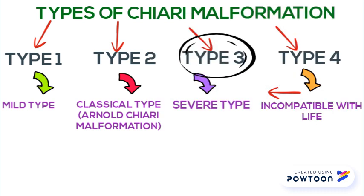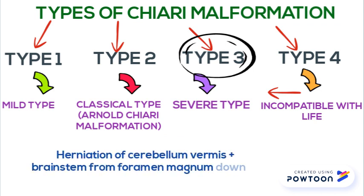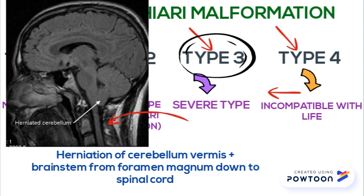In type 3 Chiari malformation, there is herniation of the cerebellar vermis plus the brain stem from the foramen magnum down to the spinal cord. The cerebellum herniates to such a degree that it compresses the spinal cord.